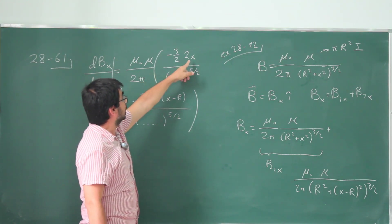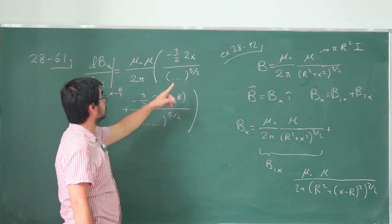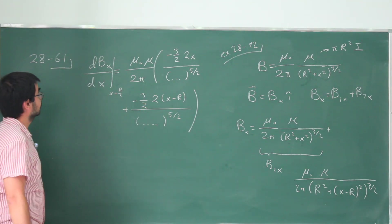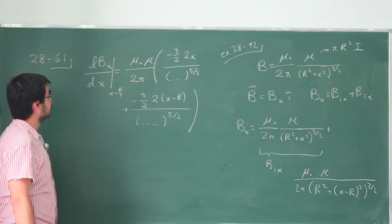The numerators, however, this becomes R over 2. This becomes minus R over 2. And everything else is identical. So these terms completely cancel each other. So when you evaluate this derivative at x equals R over 2, it is identical to 0.